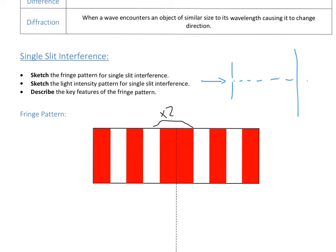With a single slit, the central fringe is double the width of all the others. We can calculate the width of the central one using: 2 times the wavelength of light times the distance of the slit from the screen (D), divided by the slit width (A). To get the width of all the other fringes, you just remove the factor of 2.